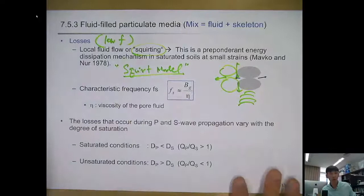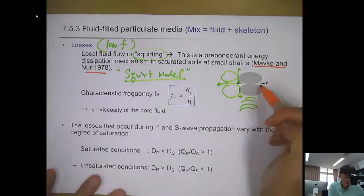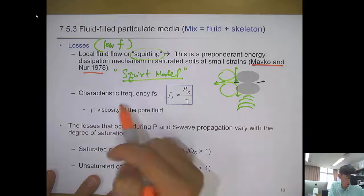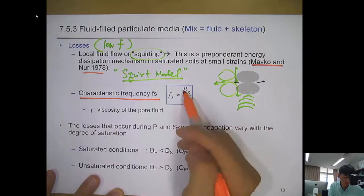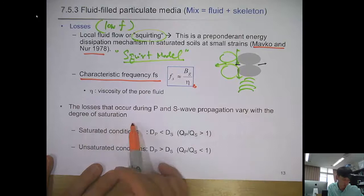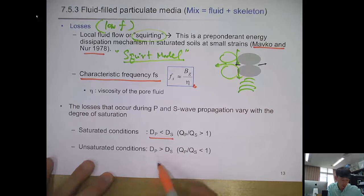The losses during P and S wave propagation vary with degree of saturation. In the saturated condition, P wave damping is less than shear wave damping. In the unsaturated condition, P wave damping becomes bigger because of the air, while shear wave damping is smaller.